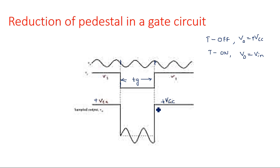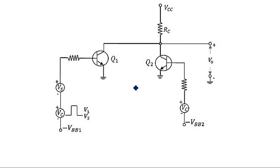There is a large difference between this VCC and the sinusoidal signal, especially if we are having a low-amplitude input signal. That is why we should definitely reduce this pedestal in the output gating circuit — this much variation is not required. What we need is only the input signal to be transmitted during the gating duration tg.